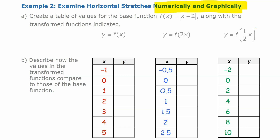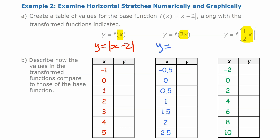Next we look numerically and graphically at horizontal expansions and compressions, using the base function y equals absolute value of (x minus 2). We're going to replace x with 2x, giving y equals |2x − 2|, and replace x with one-half x, giving y equals |(1/2)x − 2|. We then calculate the tables of values by substituting in.